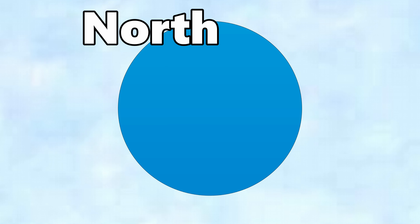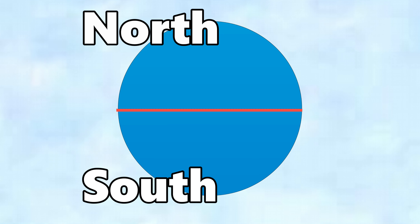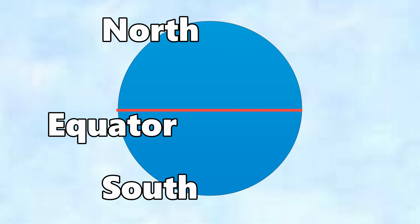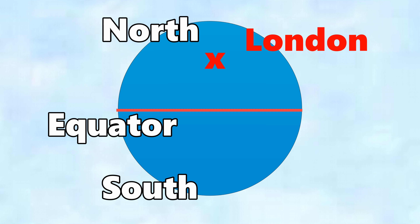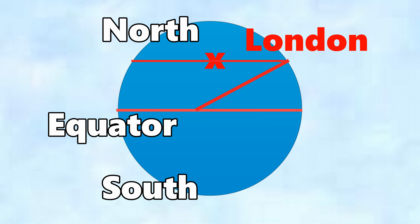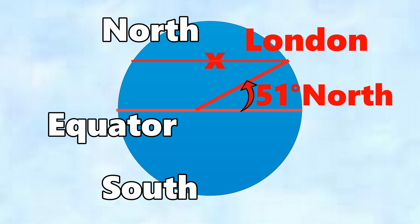Let's look at latitude in a little more detail, with the north pole, south pole and the equator. If we wanted to know the latitude of London, we draw a parallel to the equator and measure the angle at the centre of the Earth. If that angle is 51 degrees, we've found London. So London is 51 degrees north — a parallel to the equator.